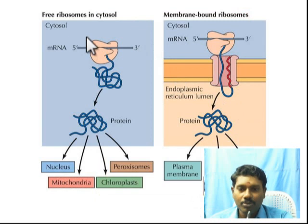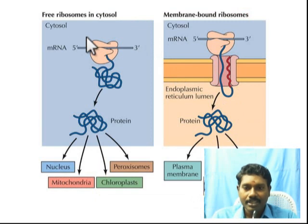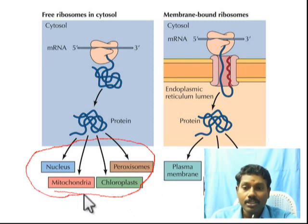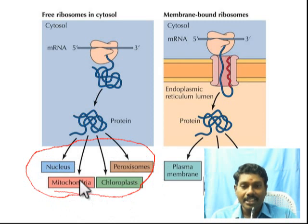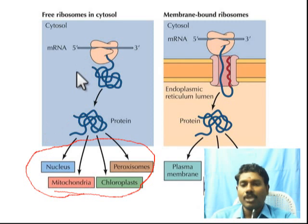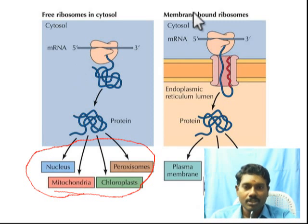The proteins produced by free ribosomes in the cytoplasm go to organelles like mitochondria, chloroplasts, peroxisomes, and the nucleus — because the nucleus requires proteins for DNA replication and transcription. Free ribosomes and bound ribosomes both produce proteins.